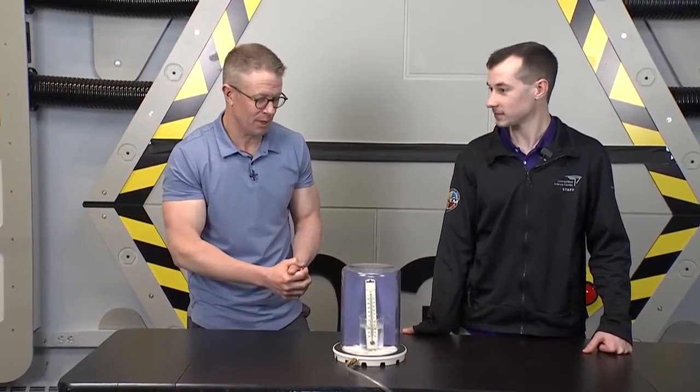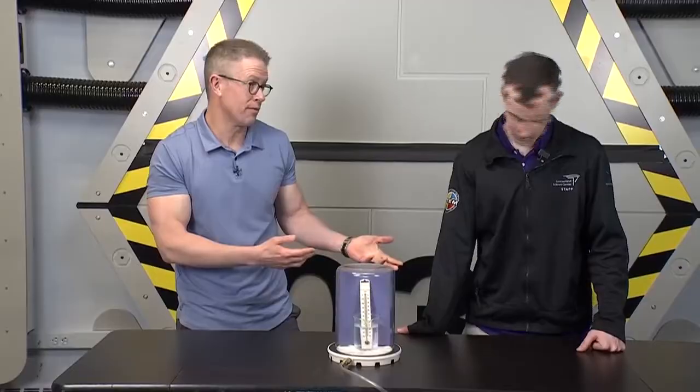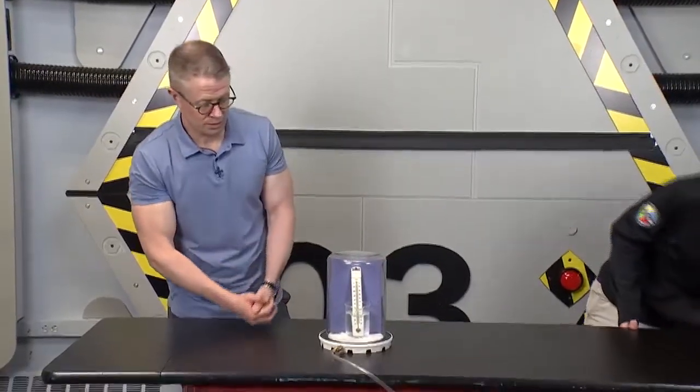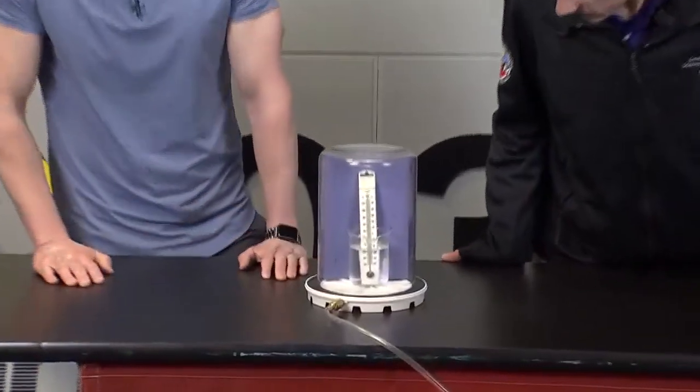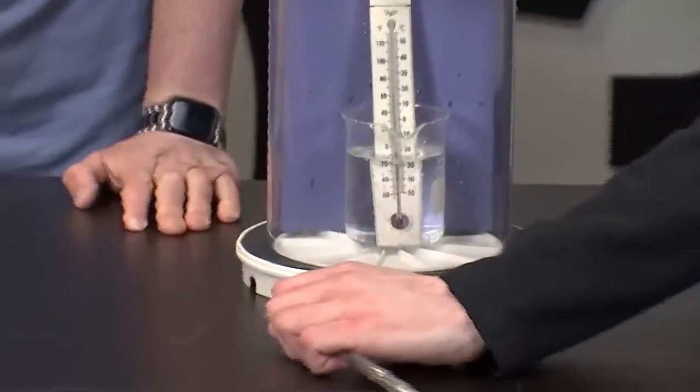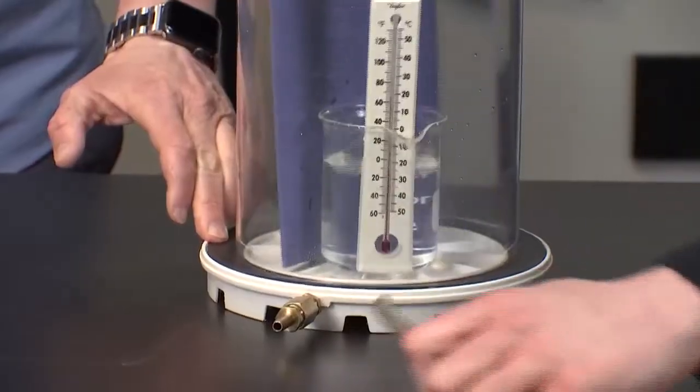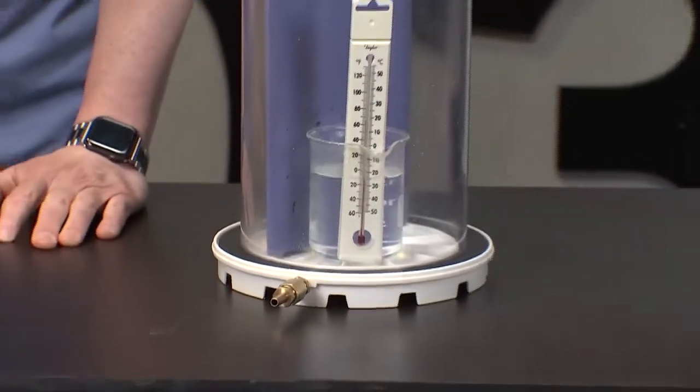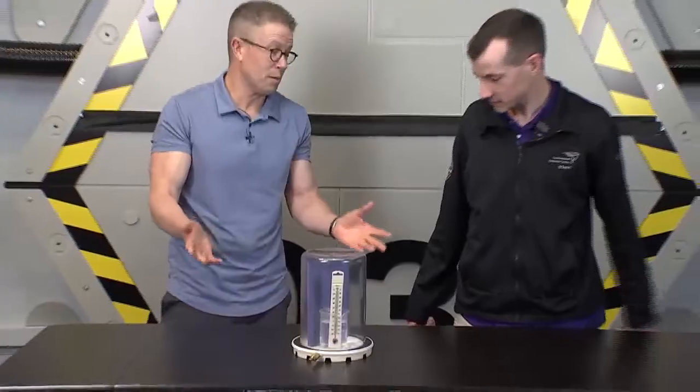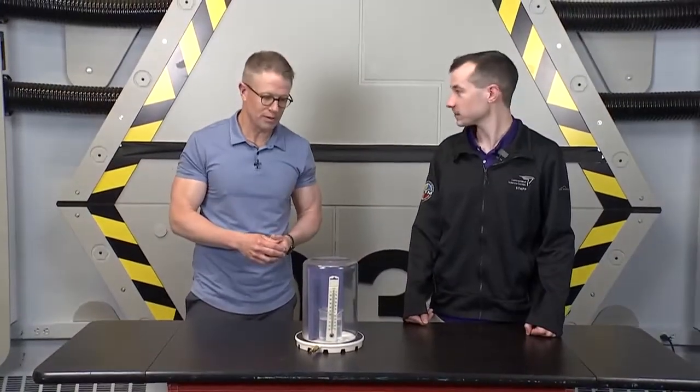Good stuff. All right, and when we turn the pump off what happens? So the water will stop boiling. And then if we remove the seal we can set the pressure back to normal. There we go. And we stayed at room temperature the whole time. Yep, the whole time. Okay, good stuff.